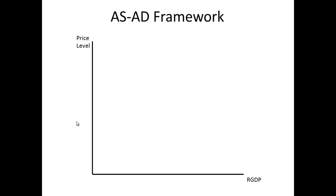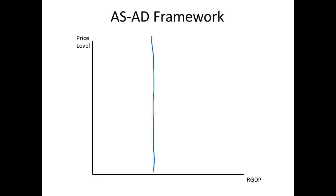Now let's work with this in what we call the AS-AD, or Aggregate Supply and Aggregate Demand Framework. We're going to graph output: the horizontal axis is real GDP — real gross domestic product, think of it as output or production — and the vertical axis is the price level, the level of prices in the entire economy. This will look a little like a normal supply and demand graph from micro, but it's not — it's for the whole economy. The main thing we're interested in with real business cycle theory is what's known as the aggregate supply curve.